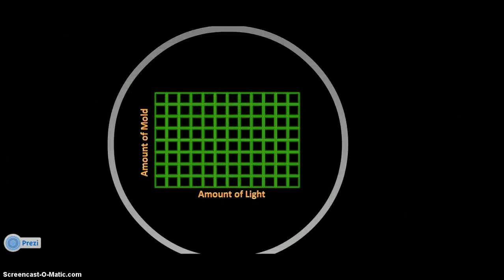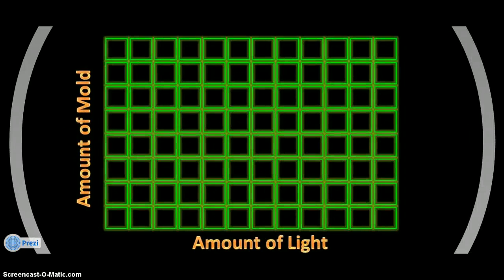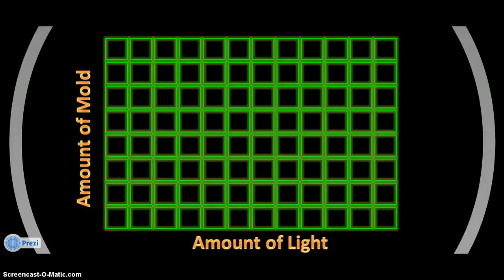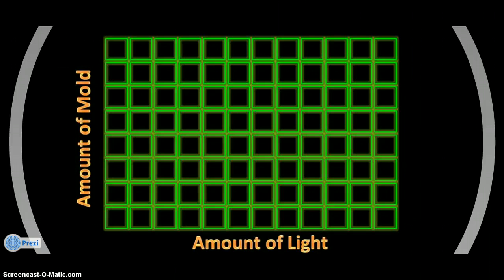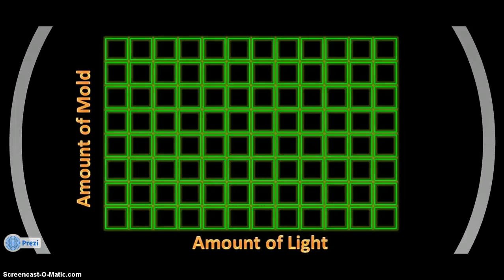So what would this graph look like? The x-axis is the horizontal line at the bottom, and it says 'amount of light' — that's correct because MIX tells us the independent variable goes on the x-axis. On the y-axis, the vertical straight up-and-down line, it says 'amount of mold.' The dependent variable is the thing I'm measuring, and it goes on the y-axis because D-R-Y: dependent variable goes on the y-axis. If you have any questions, make sure you ask me in class tomorrow.